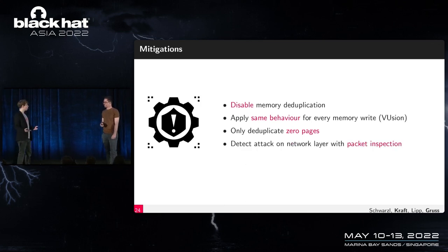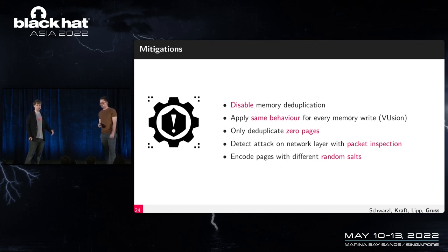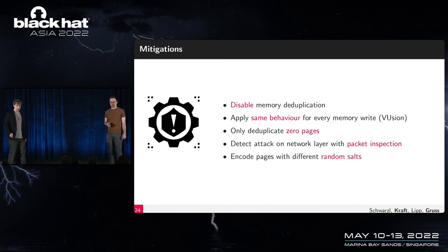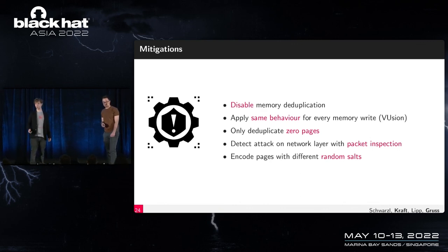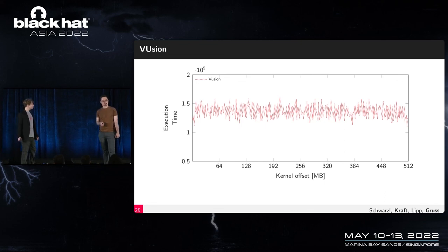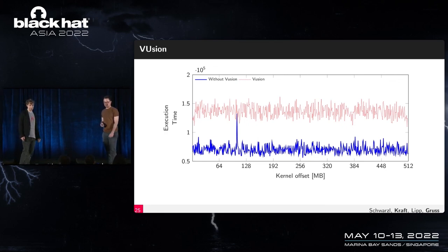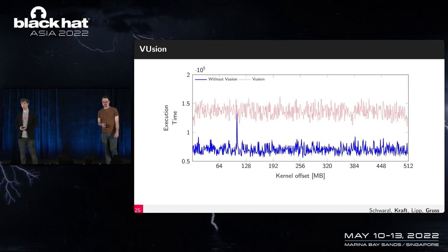You could also detect the attack at a network layer since the attacker is sending many packets. Another approach would be to encrypt or encode pages with a random salt or key so they can't be deduplicated — but if the key is domain-specific, it would still allow the same intra-domain attack, which boils down to disabling deduplication. We evaluated the fusion mitigation: with fusion enabled, the timing difference disappears, but when fusion is disabled you can still clearly see the correct kernel offset in the KASLR break.